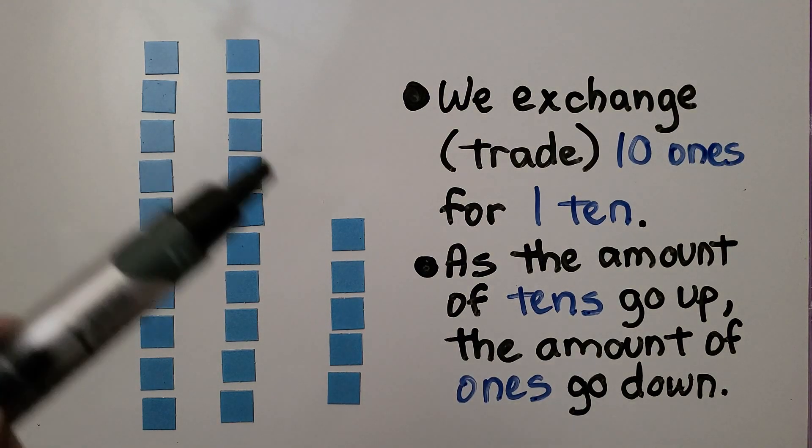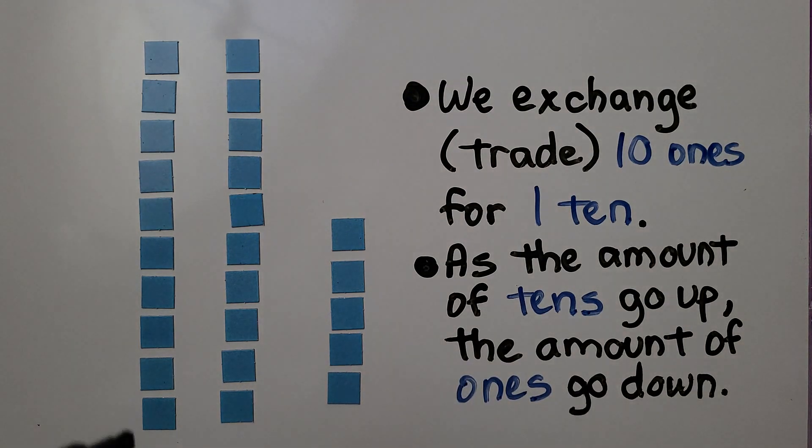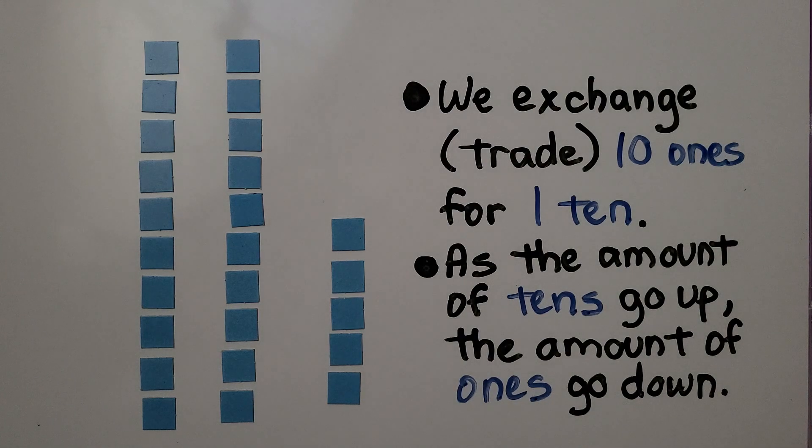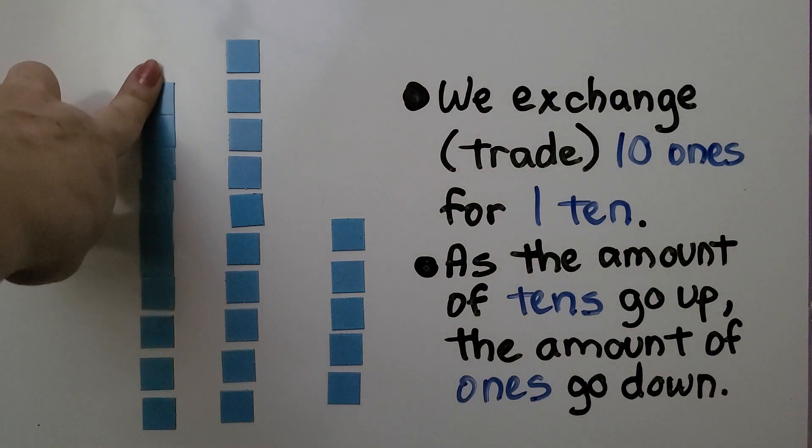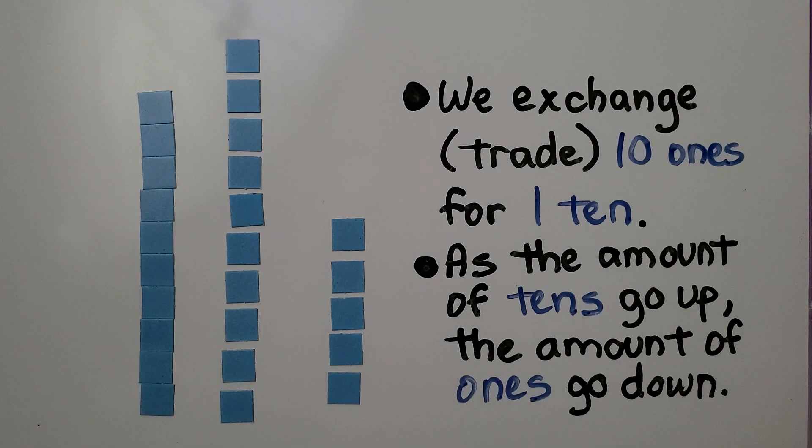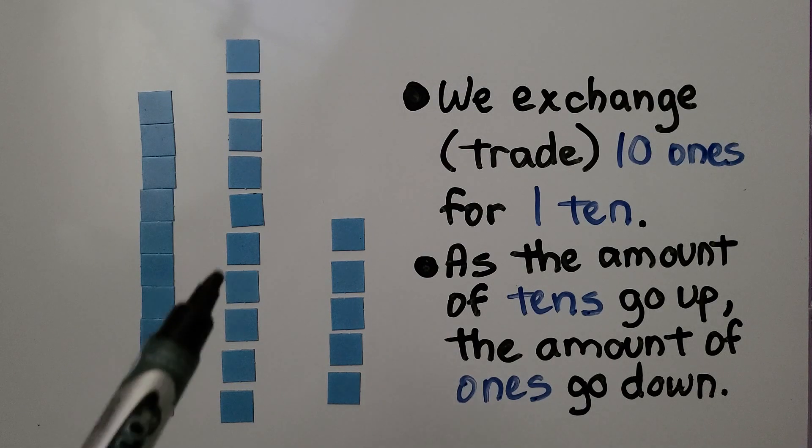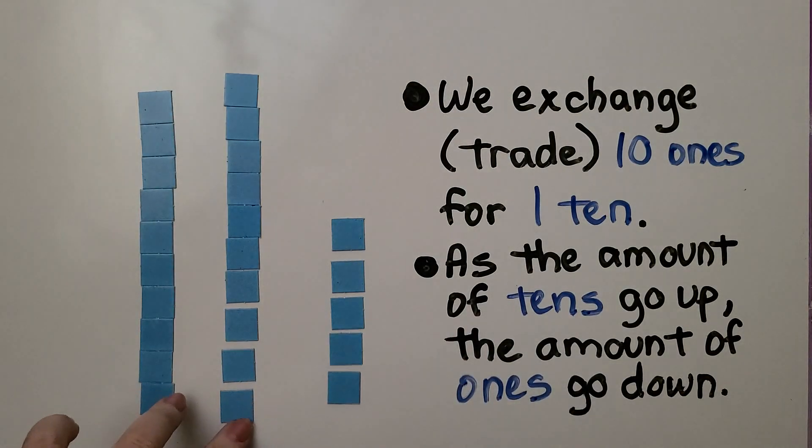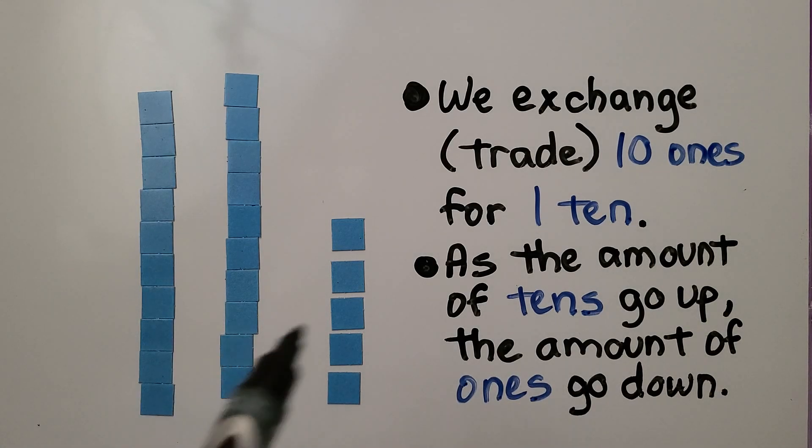Here we have 25 ones and we can trade 10 of these ones for a 10. We can actually squeeze these together and make a strip of 10. Now we have 1 ten and 15 ones. And we can turn this into a strip of 10. We can squeeze it down. Now we have 2 tens and 5 ones. As the amount of tens go up, the amount of ones go down.